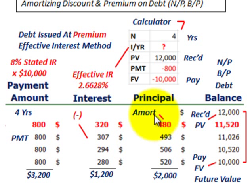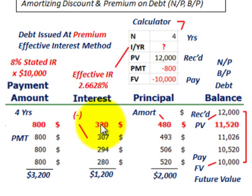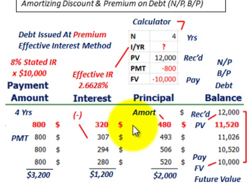To amortize the note, take your beginning balance — the present value of $12,000 — times the effective interest rate of 2.6628%, and you get $320 of interest expense on an effective basis for the first year. Our cash payment was $800, but effectively we're only paying $320. So the difference between the $800 and the $320 is the amount we're going to amortize — $480.